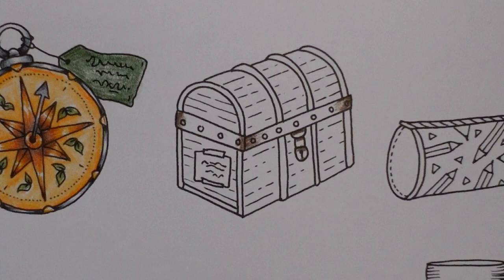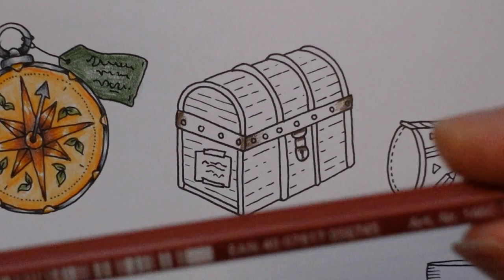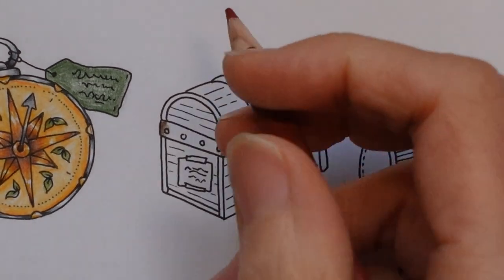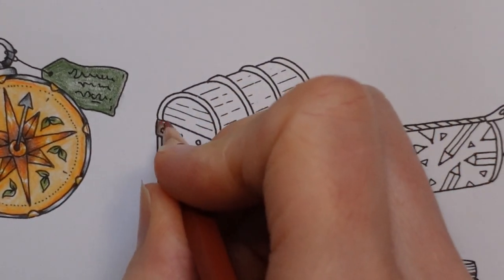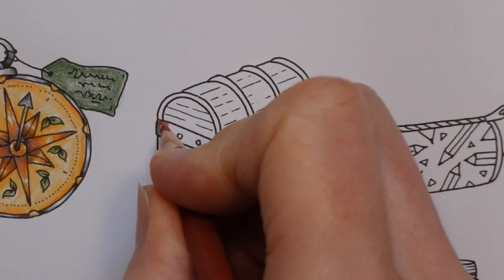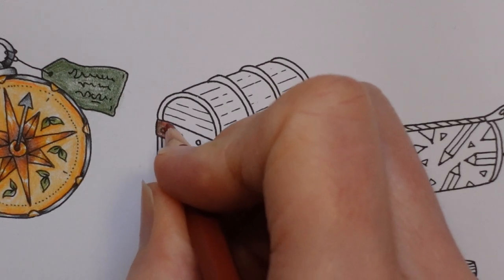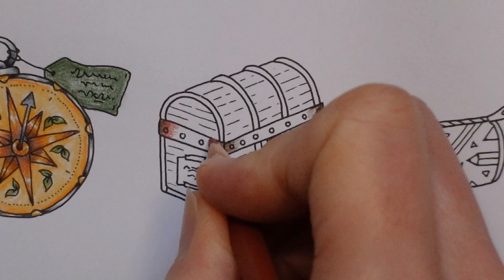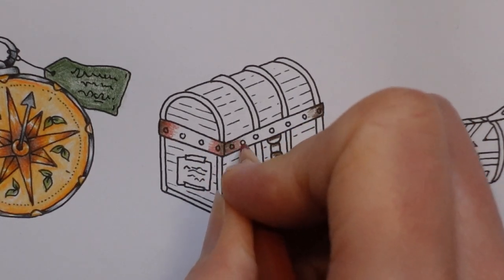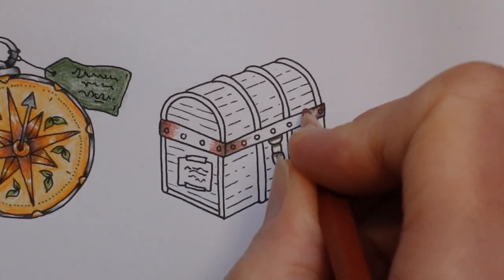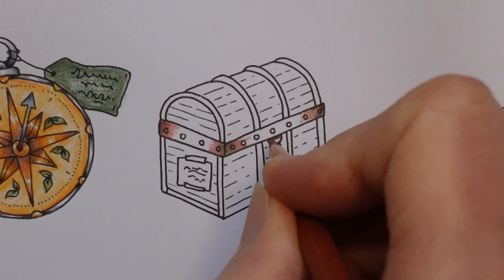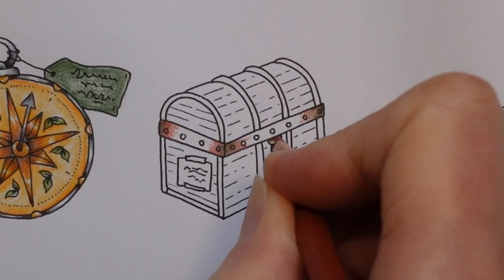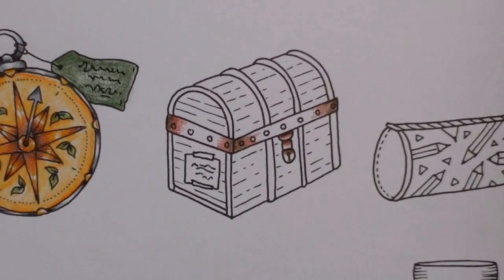Now my next color is going to be this Dark Sand, number 72. It's quite a reddish brown. I think this might help us get a more coppery look. So I'm going to go over the top of that dark brown that I did already and just spread that color forward a bit. It looks quite reddish, but we'll just see how it pans out.